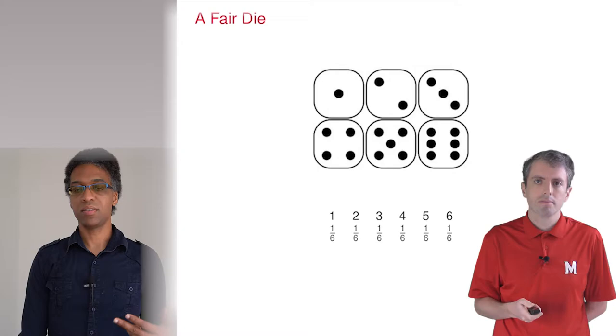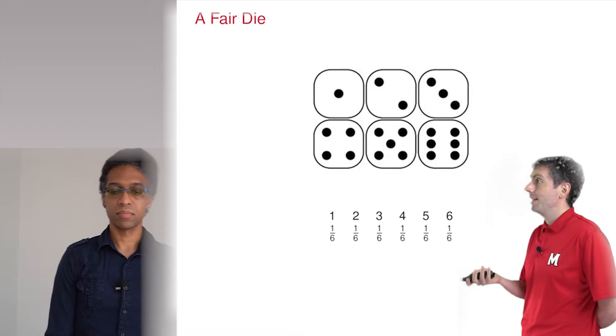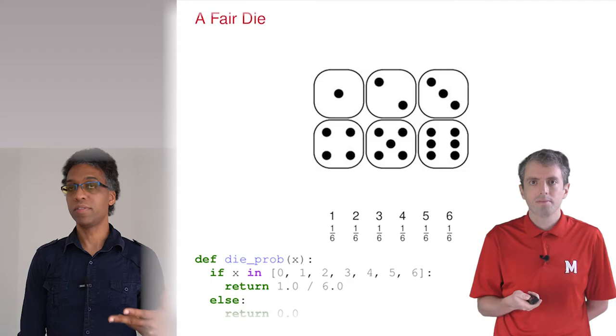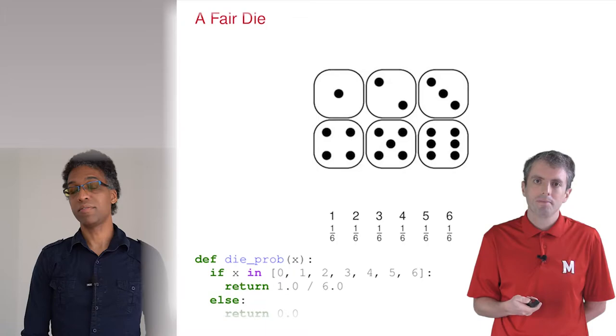So would there be any problem with representing this as a Python function that just returns 1 over 6? That wouldn't work, as the sum would be more than 1. Okay, so it would have to look like this. First checking whether a number is in the event space, and then return 0 if it isn't.